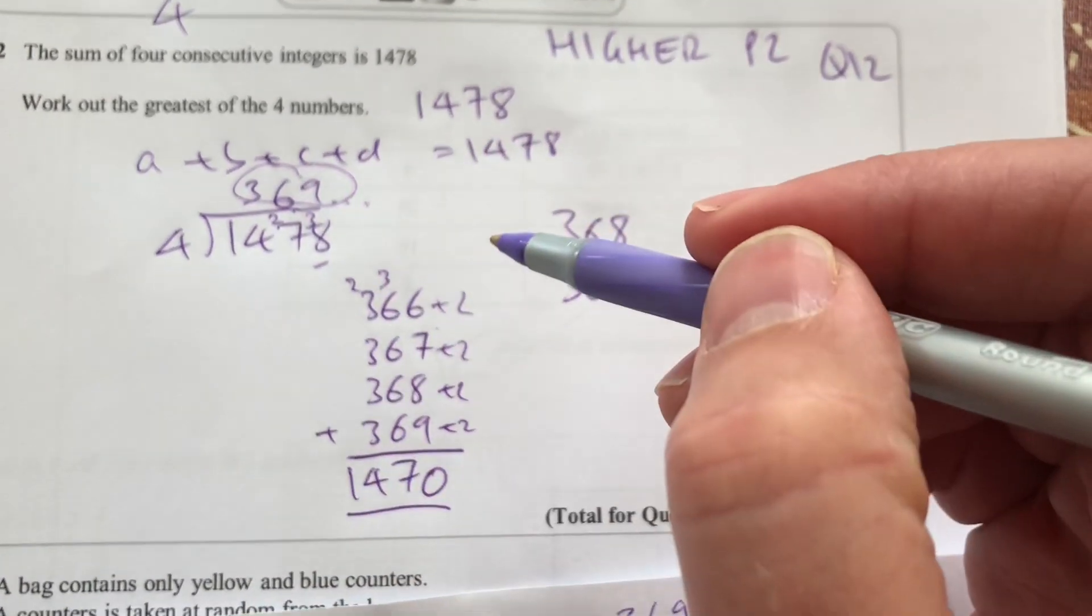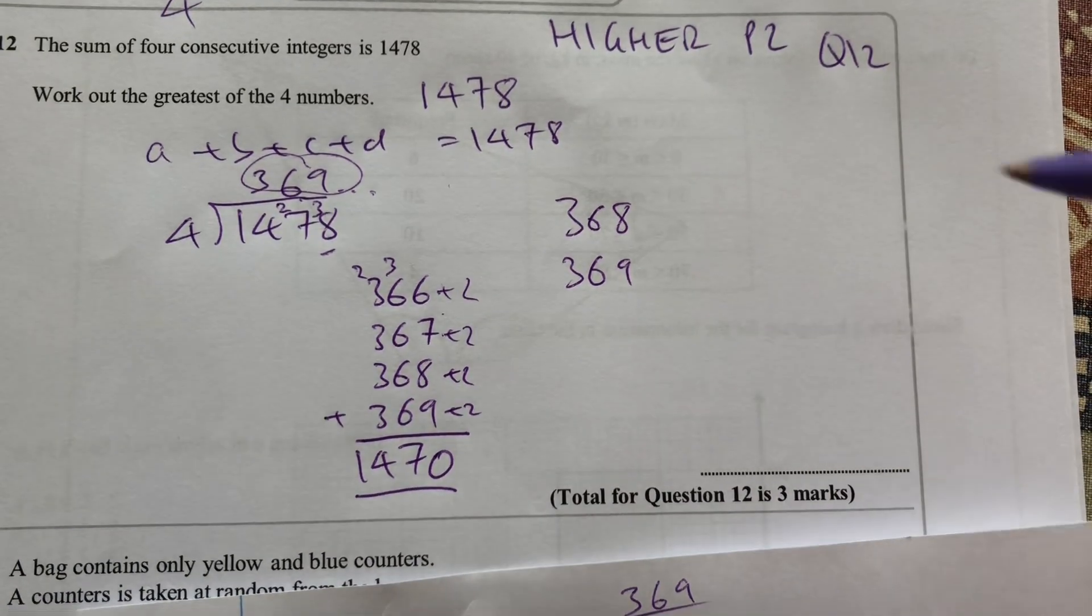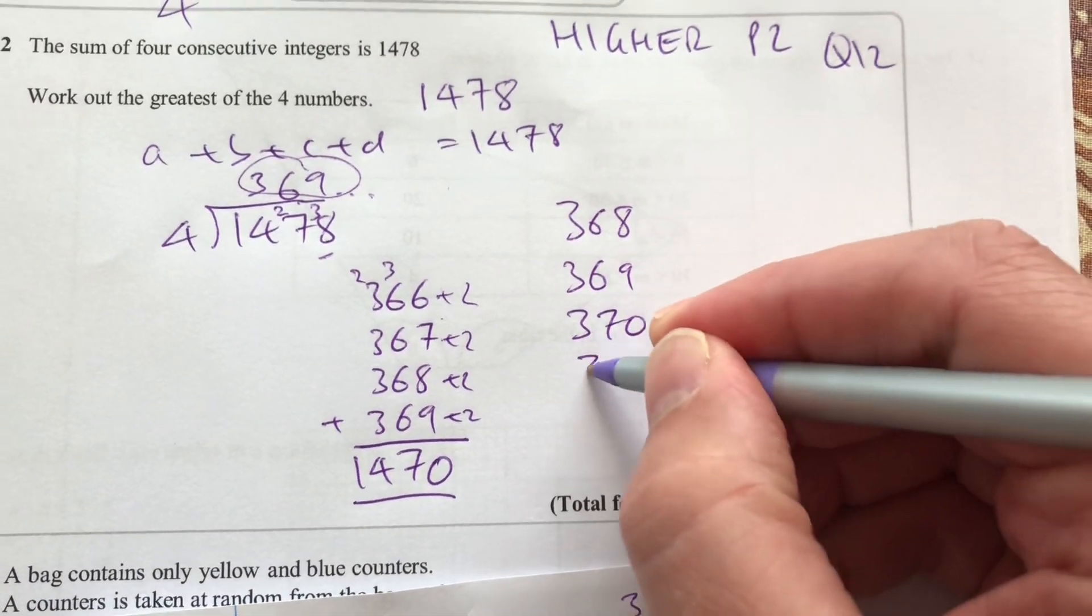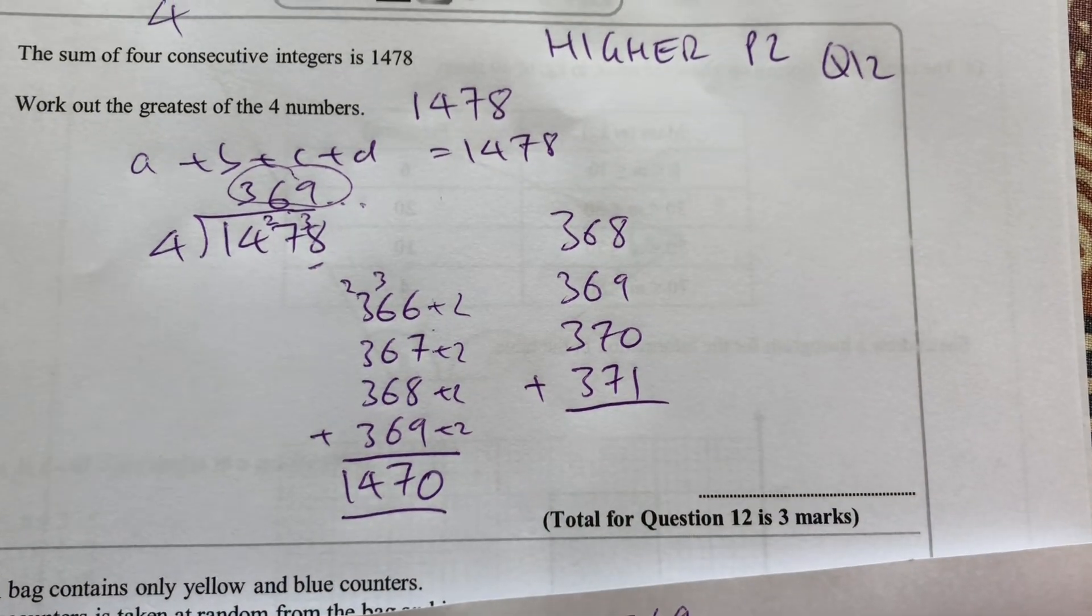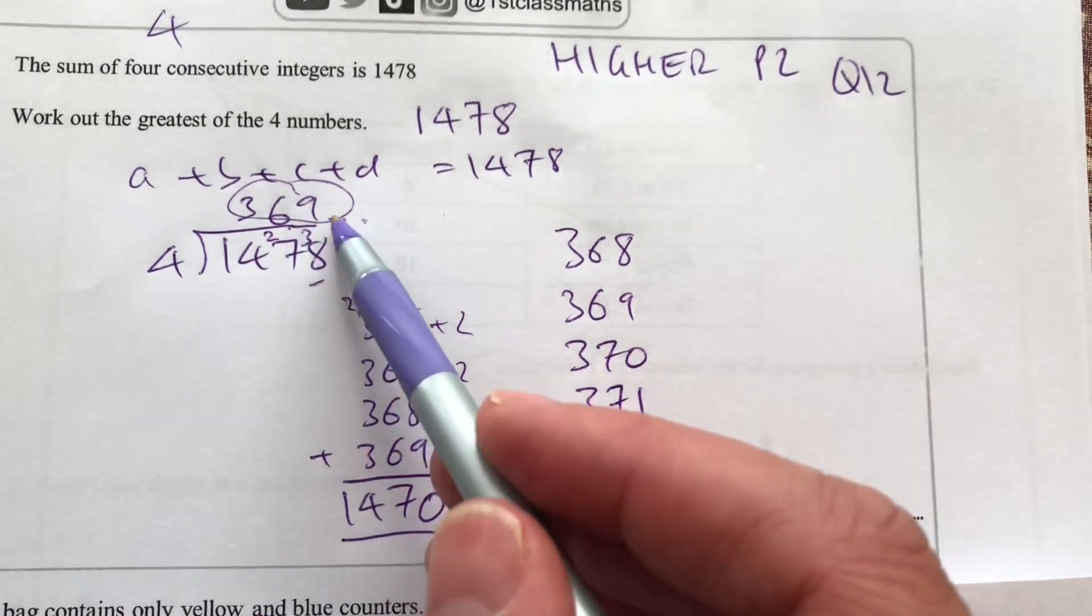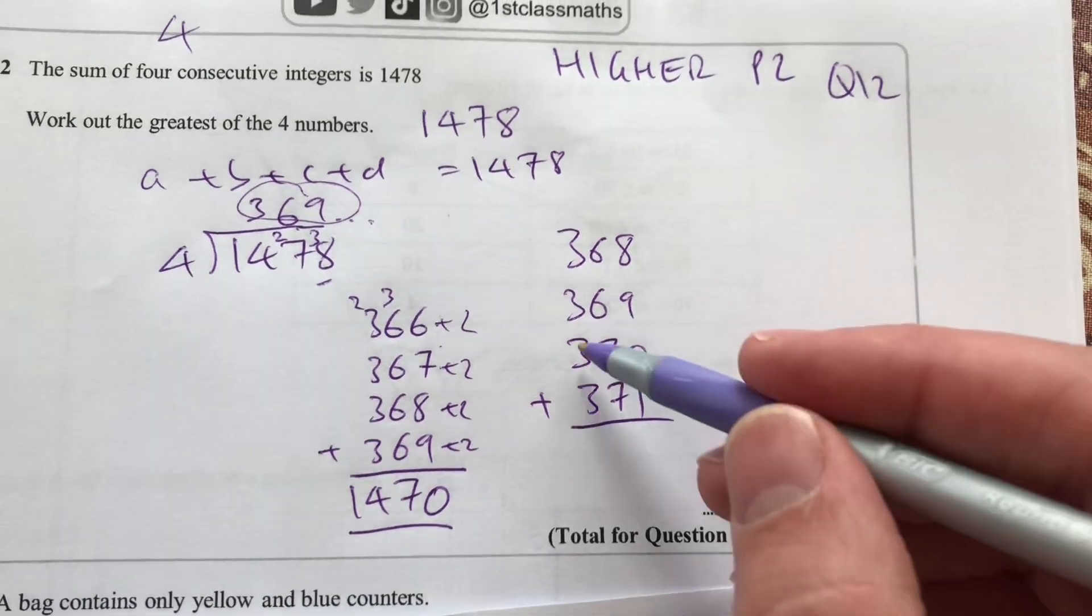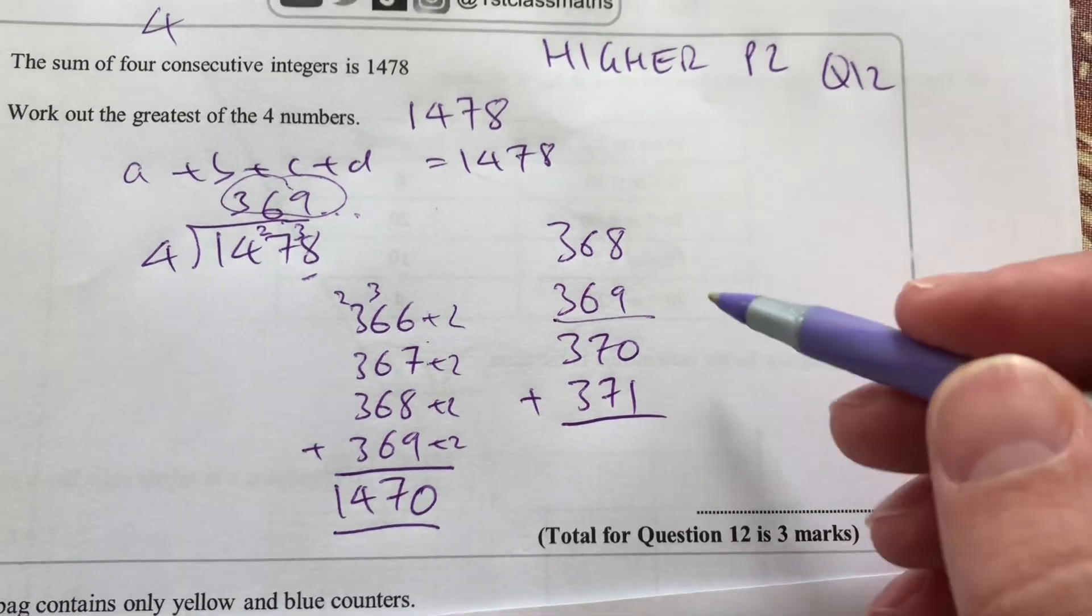and I should have realized that needed to be in the middle of that, 370 and 371, because dividing by 4 would give me the average of those numbers, roughly. And remember, I had some remainder there. So that would have given me a better idea. Anyway,